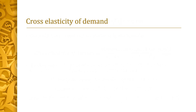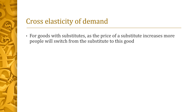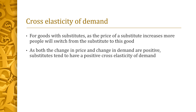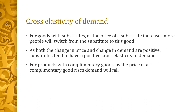For goods with substitutes, as the price of a substitute increases, more people will switch from the substitute to this particular good. As both the change in price and change in demand are positive, substitutes tend to have a positive cross elasticity of demand. If the price of a substitute decreases, people would switch from our good to the substitute — in this case the change in price and change in demand are both negative, so we would still have a positive cross elasticity of demand.